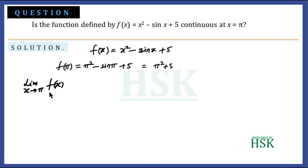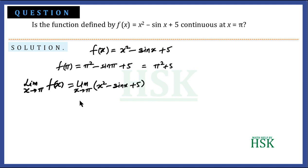The limit of x tends to π of f(x) would be equal to the limit of x tends to π of x² − sin x + 5. To solve this limit, we use the method recommended in the NCERT book.